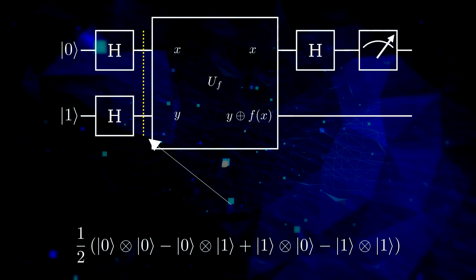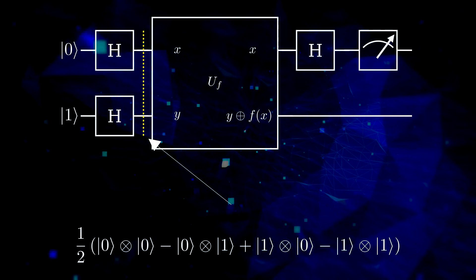By using bilinearity, this can be rewritten. Then, we apply the quantum gate that encapsulates our function f.